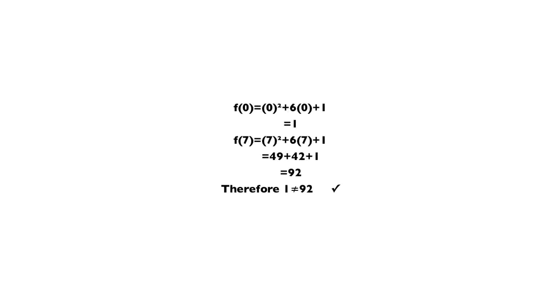Second question: is F of 0 not equal to F of 7? If you put 0 in place of X, 0 squared plus 6 times 0 plus 1 is equal to 1. And if you put 7 in place of X, 7 squared plus 6 times 7 plus 1 is equal to 49 plus 42 plus 1, which is equal to 92. Therefore, 1 does not equal 92, and that checks.